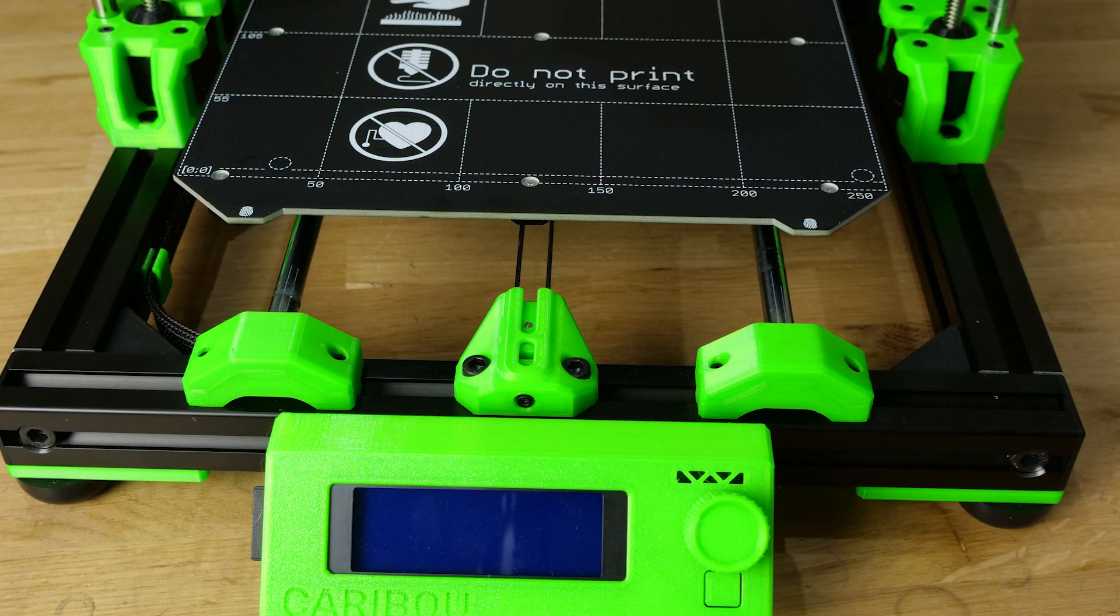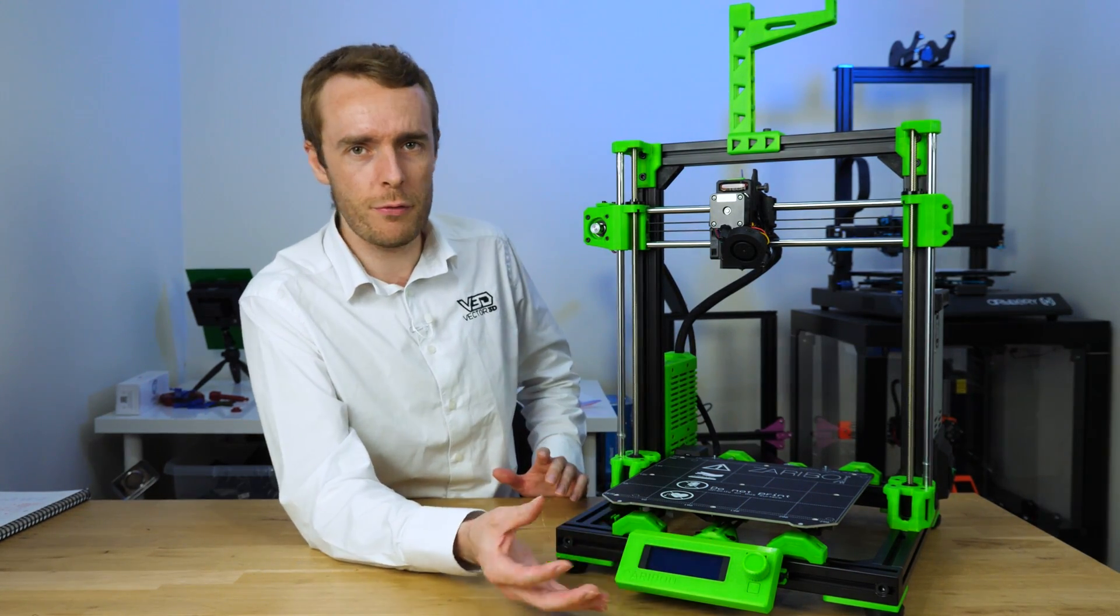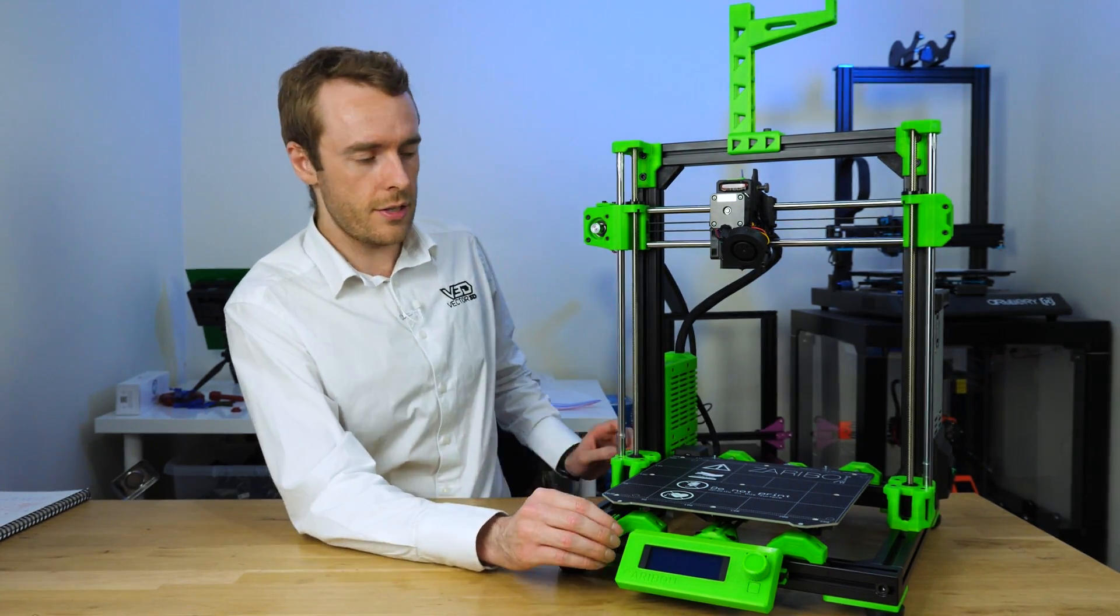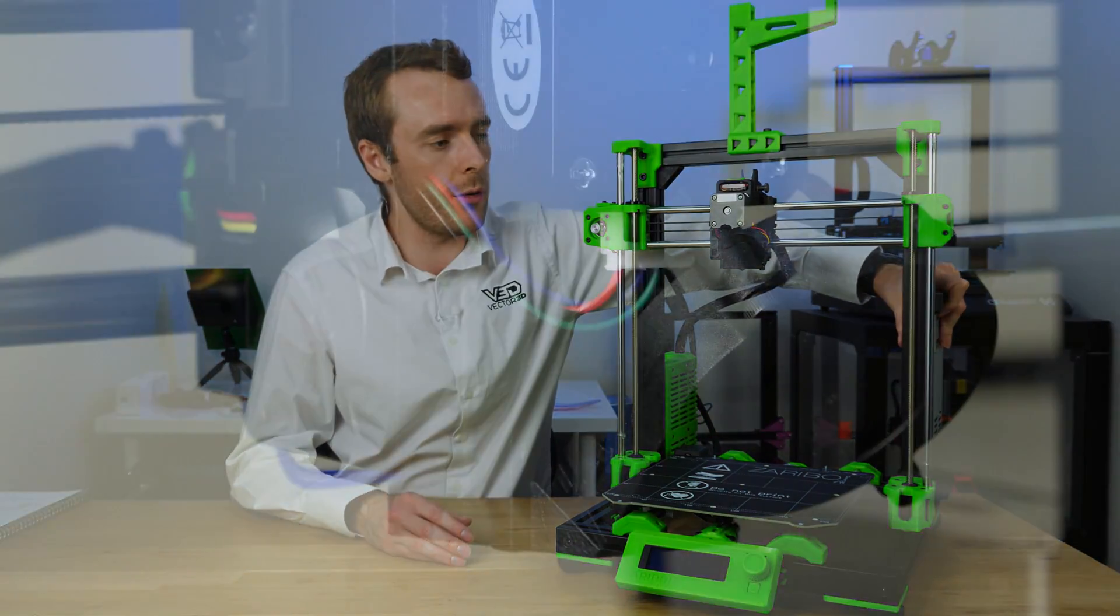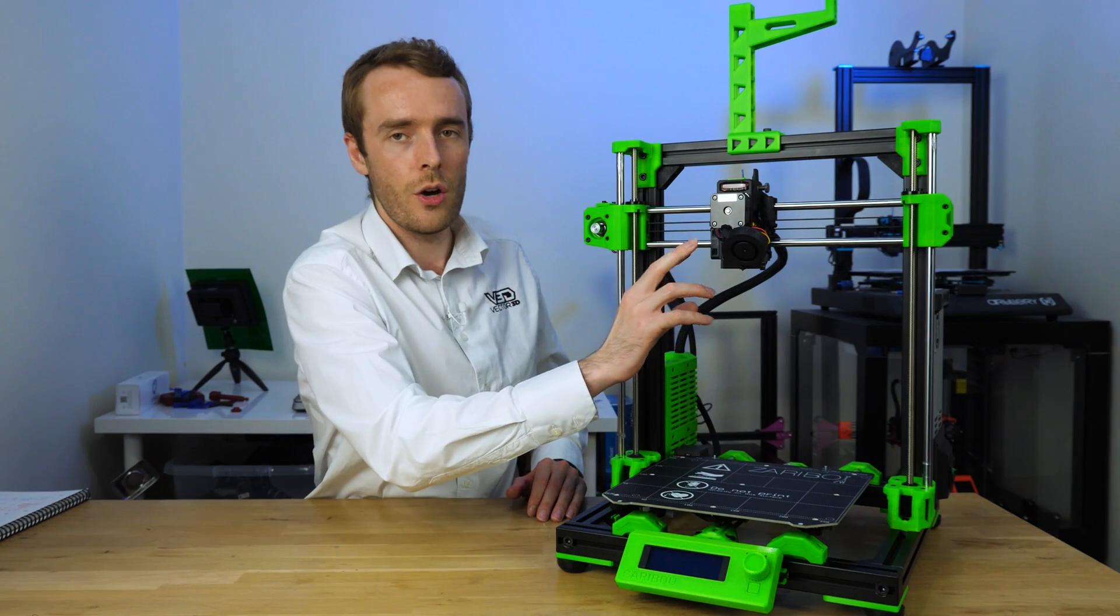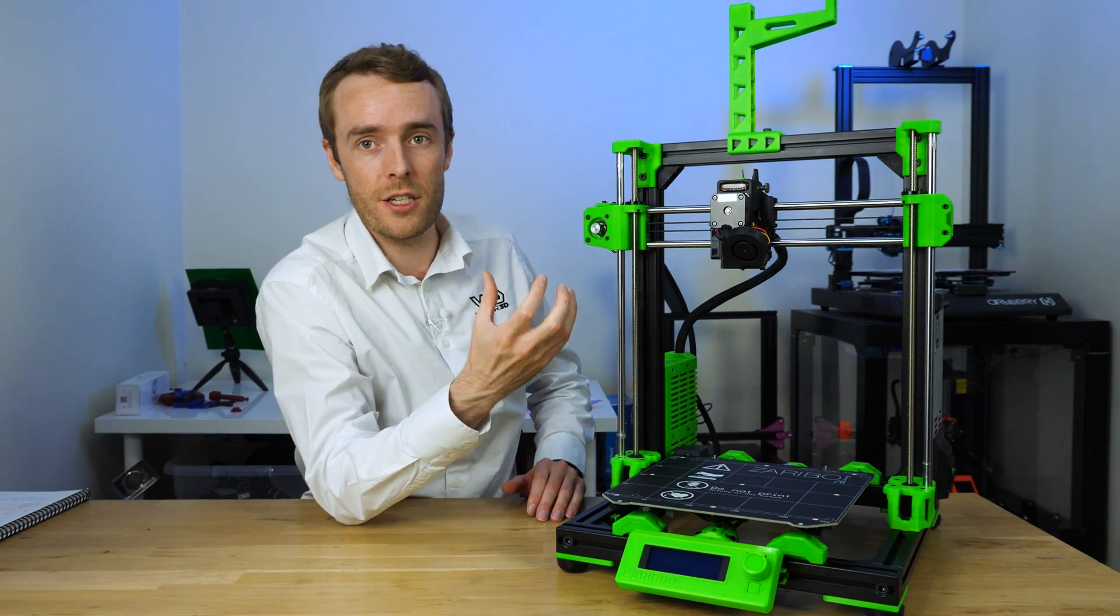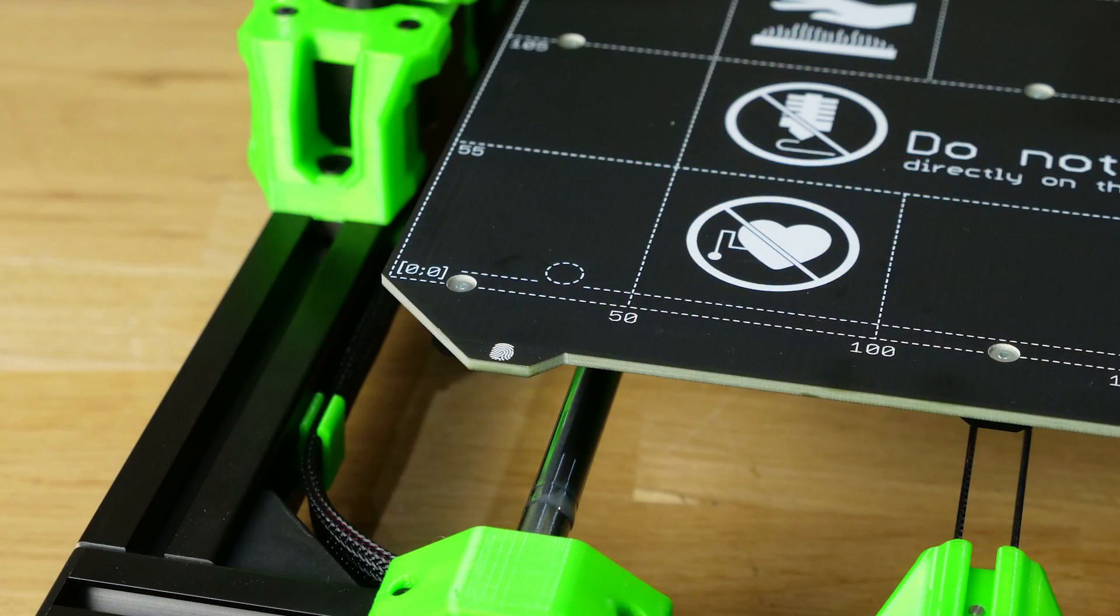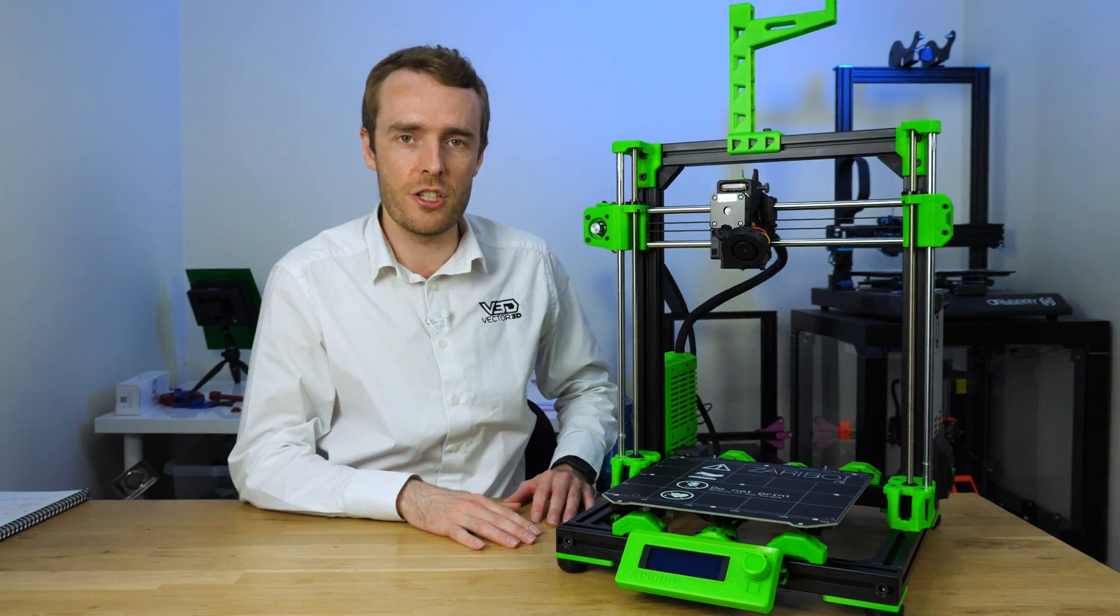Everything else is basically the same, we've got the same control board as the original Prusa, pretty much the same screen, it can come with OLED options but performance wise it's going to be the same. Still SD card, similar sort of power supply, this is a 320 watt Meanwell power unit, very similar fans for both the part cooling and hotend cooling, although they do have an increased flow output which means potentially better cooling. And of course the heated bed is the same sort of 24 volt PCB design with magnets on the bottom for using a spring steel sheet.